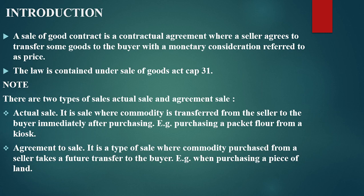In a sale of goods contract, a full barter trade is not covered — it is not a sale of goods contract if it is purely a barter trade. However, if it is a partial barter trade, it can be considered a sale of goods contract. A sale of goods contract ceases to apply where goods are bought in full barter trade — for instance, where you exchange a car for a piece of land without any monetary consideration.